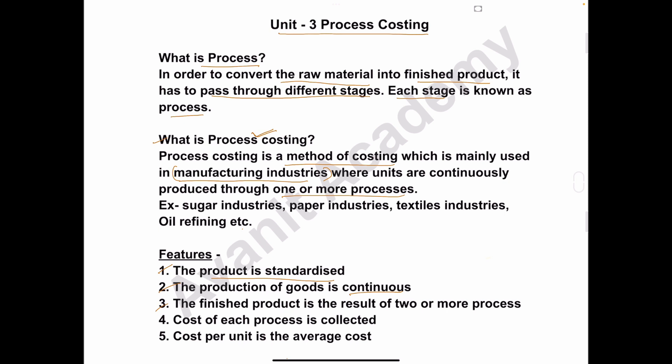Third: the finished product is the result of two or more processes. As mentioned, to get the finished product, the raw material has to be passed through two or more stages. Fourth: the cost of each process is collected. Fifth: the cost per unit is the average cost. These are the five features of process costing.